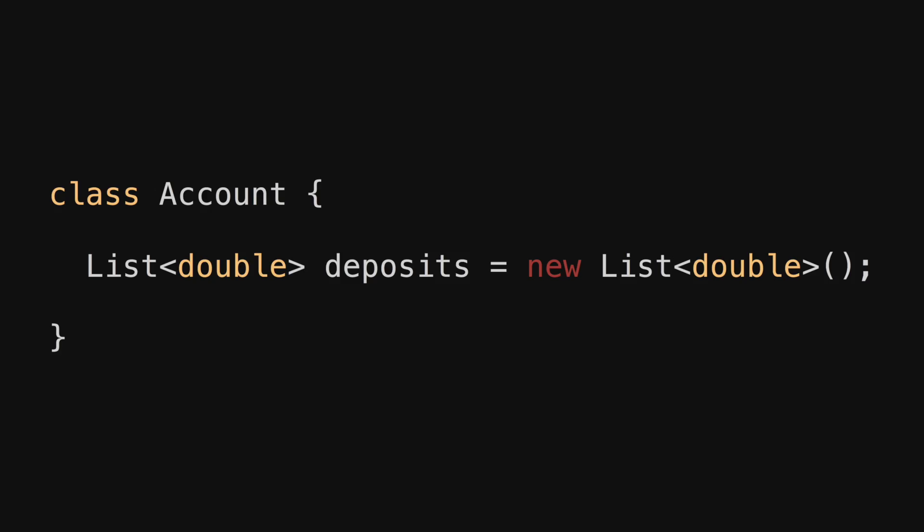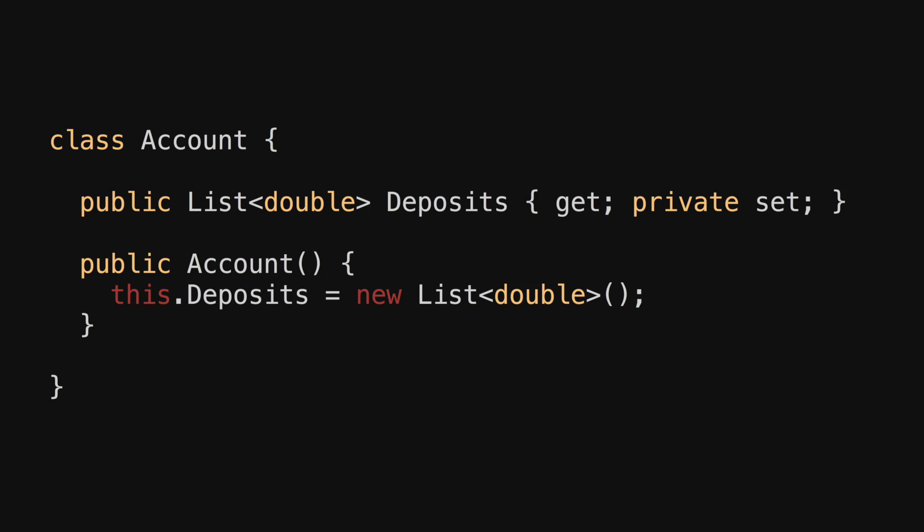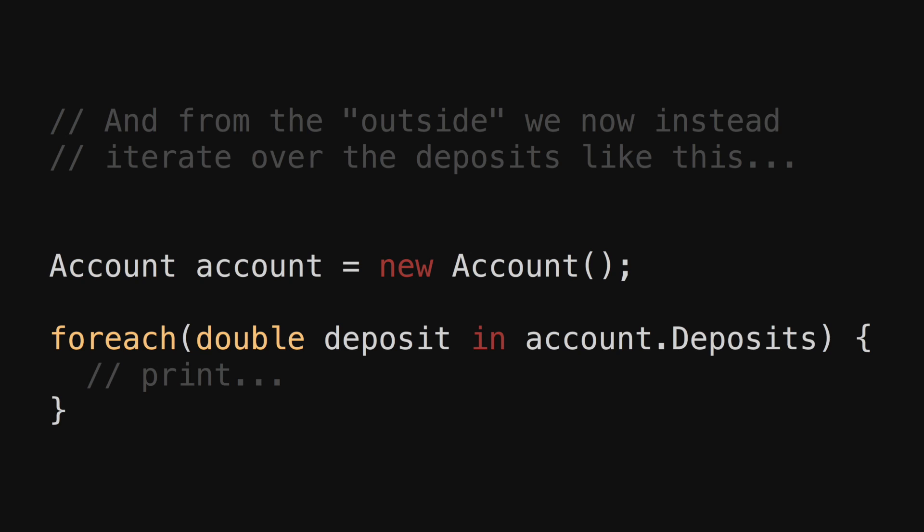So in order to get access to these deposits from the outside, we need to somehow expose the list out of the account. This is the happy moment when we realize that in languages such as C#, we have members that can be publicly gettable but privately settable. So it feels like a perfect scenario — we simply mark the list to have a public getter and a private setter. Fine and dandy, we call it a day.